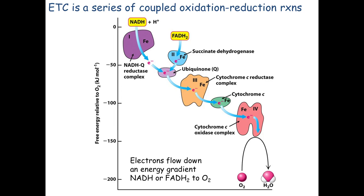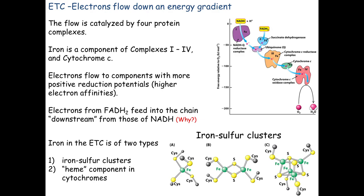Iron is excellent at carrying electrons, as are most transition metals, because they can change oxidation state — iron goes from Fe²⁺ to Fe³⁺ when it loses an electron and back to Fe²⁺ when it gains one. We see iron in all these complexes in the form of iron-sulfur clusters. In the simplest form, a single iron atom is held by four cysteine amino acids via their sulfhydryl (–SH) groups, where the sulfur makes a bond to iron.